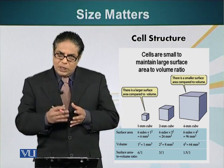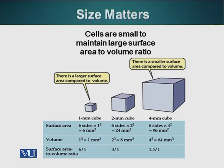Let's look at the general formula. The surface area of a cube is calculated by adding the area of its six sides. If a cube is 1 millimeter in each dimension, the surface area is 6 mm² and the volume is 1³ = 1 mm³, giving a surface area to volume ratio of 6:1. Now for a slightly bigger cube with 2 millimeters on each side, the surface area becomes 24 mm², the volume is 2³ = 8 mm³, so the surface area to volume ratio is 24:8, or simplified, 3:1.